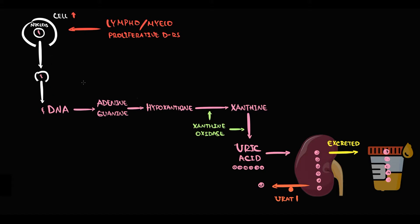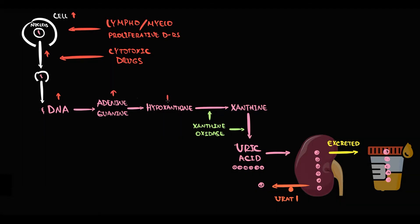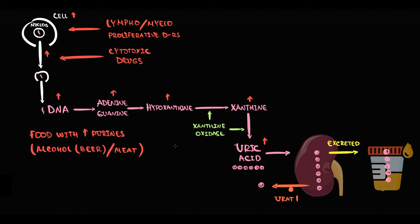Cytotoxic medications also increase uric acid, because cytotoxic drugs cause an increased cell death rate — the greater the amount of cells that die, the greater the release of DNA molecules and thereby uric acid production. The most common factor is intake of food with high concentrations of purines: alcohol (especially beer), meat, and fish. The higher the consumption of purines, the greater the production of uric acid.